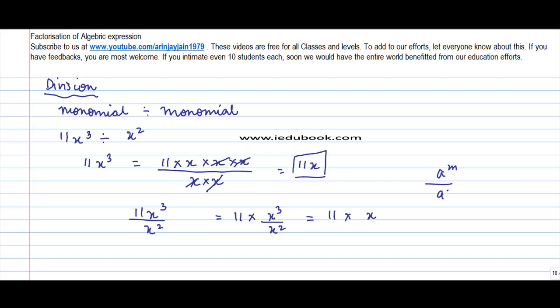Here, a = x, so x³/x² = x^(3-2) = x¹ = x, giving us 11x. That's how you divide one monomial by another. Now let's do another example.